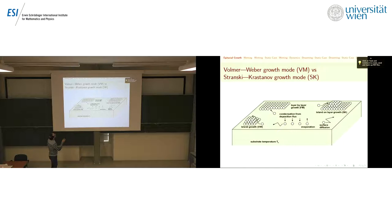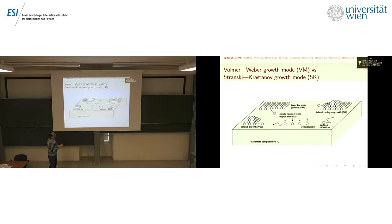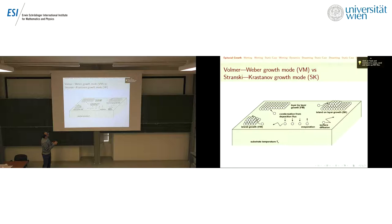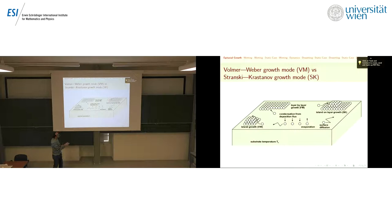These are the two types of growth we are going to study from the point of view of calculus of variation. The first is what is called the wetting mode — the SK method — where on top of a few layers of atoms you have the creation of an island. This is called the wetting regime because you have a wetting layer and then an island on top. In the other growth mode — the de-wetting regime — you just have the island directly on the substrate, with the substrate exposed around it.